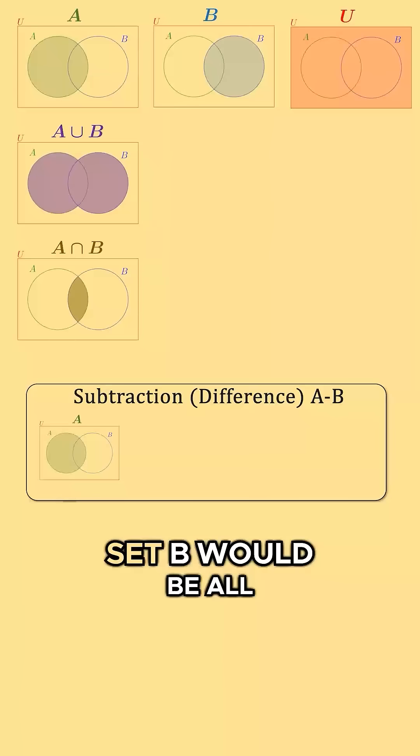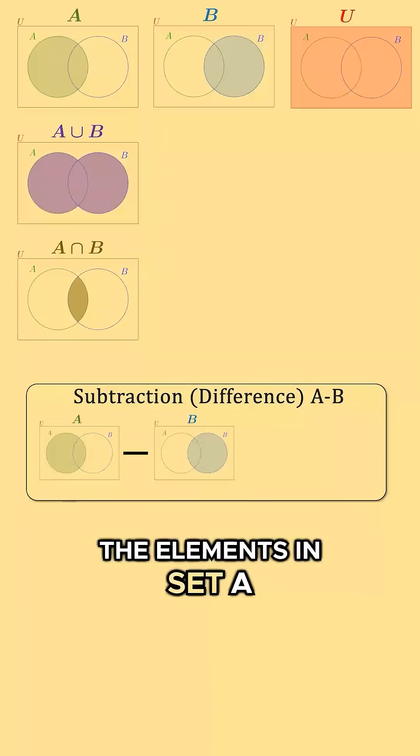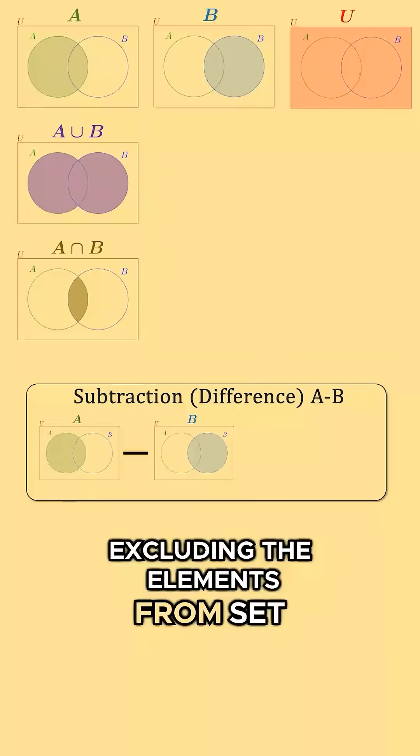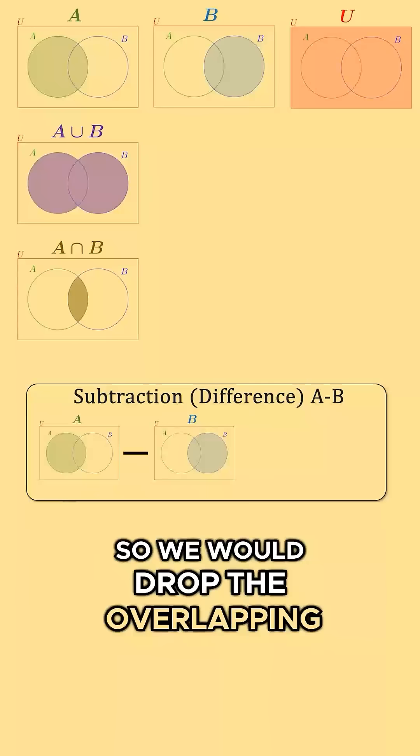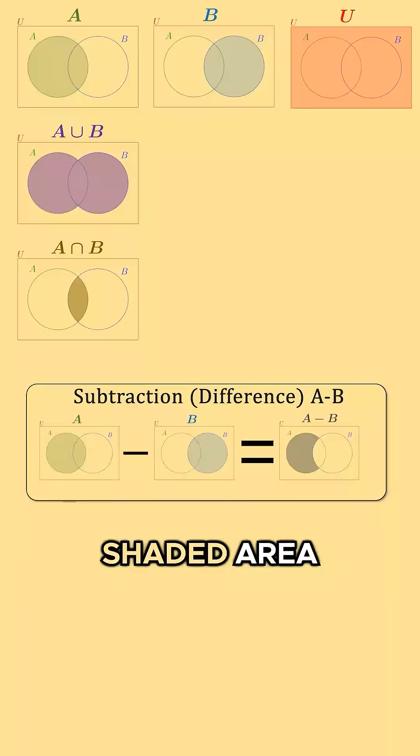The difference of set A and set B would be all the elements in set A excluding the elements from set B. So we would drop the overlapping section and be left with this shaded area.